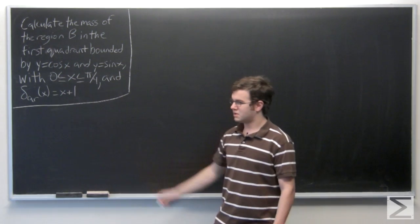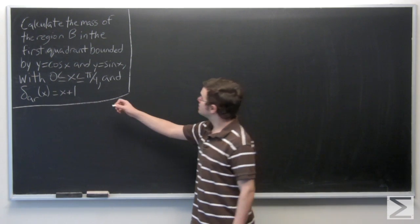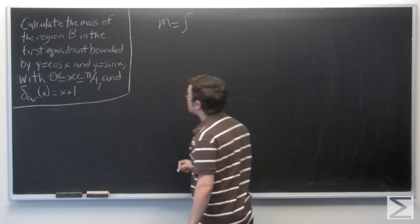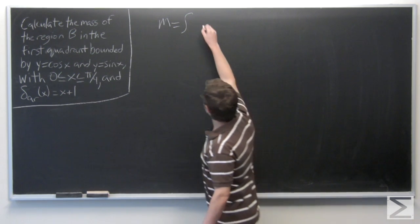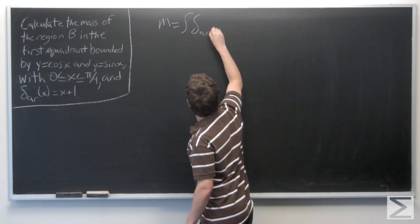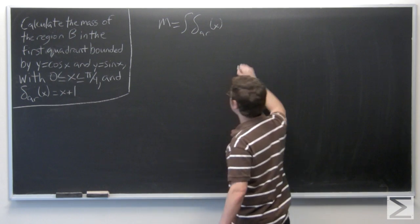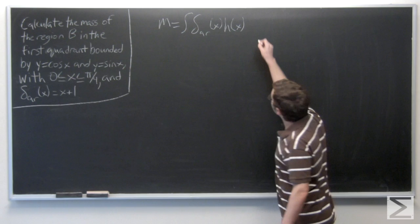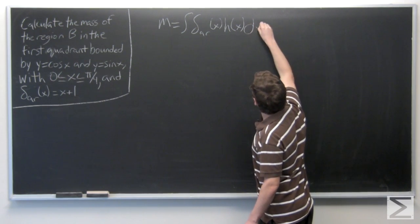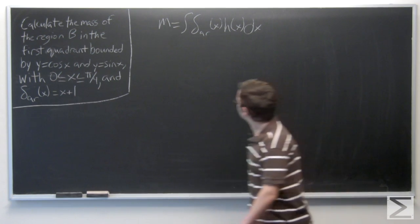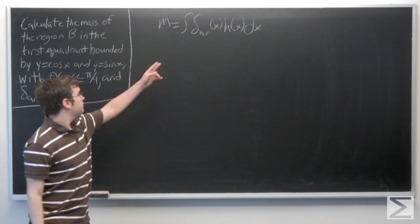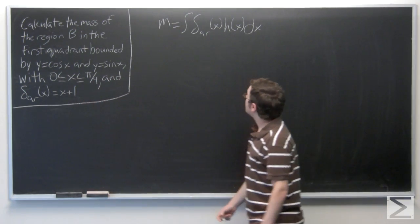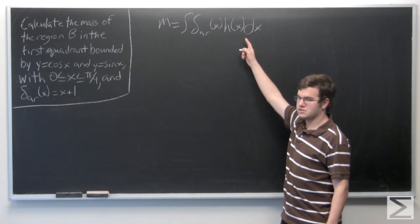In order to solve this problem, we need to find the mass. Mass is equal to the integral of area density times the height function, dx. We are given the area density in the problem — it is x plus 1 — and now we need to find the height function.